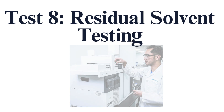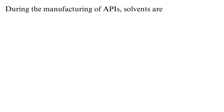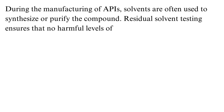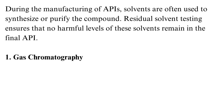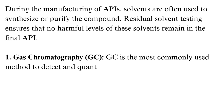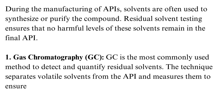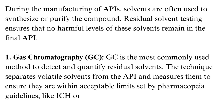Test 8: Residual Solvent Testing. During the manufacturing of APIs, solvents are often used to synthesize or purify the compound. Residual solvent testing ensures that no harmful levels of these solvents remain in the final API. Gas chromatography (GC) is the most commonly used method to detect and quantify residual solvents. The technique separates volatile solvents from the API and measures them to ensure they are within acceptable limits set by pharmacopoeia guidelines like ICH or USP.